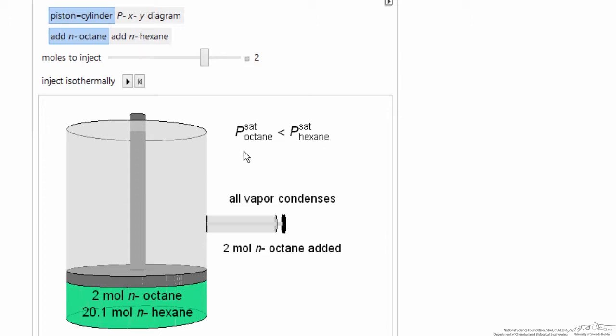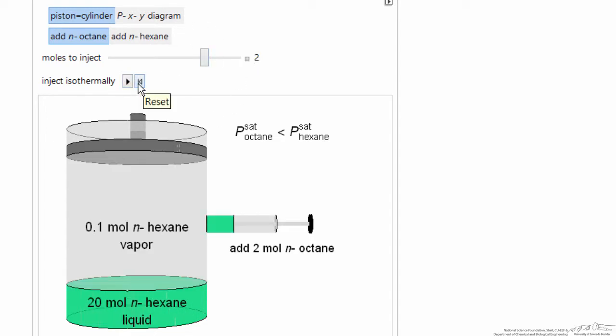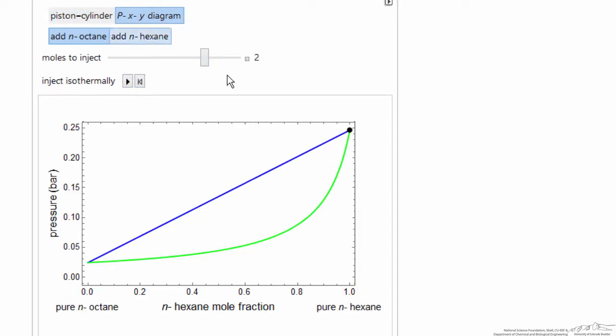So we've injected normal octane, which has a lower saturation pressure. Let's reset this and look at the PXY diagram.